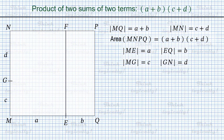Guess what we do next? Of course, we draw segment GH parallel to sides MQ and NP, where point H belongs to the opposite side PQ. And let O be the common point of segments EF and GH. Segments EF and GH split rectangle MNPQ into four rectangles with areas ac, ad, bd, and bc.